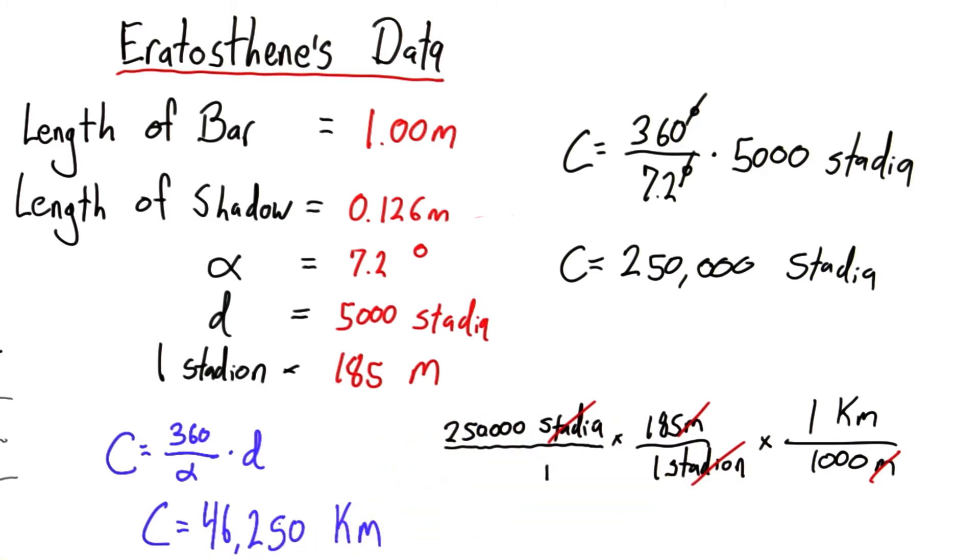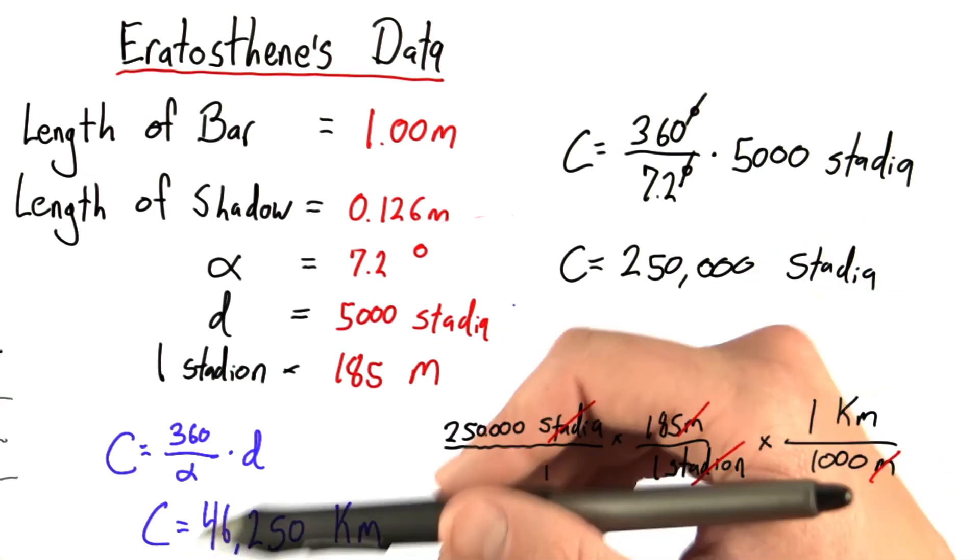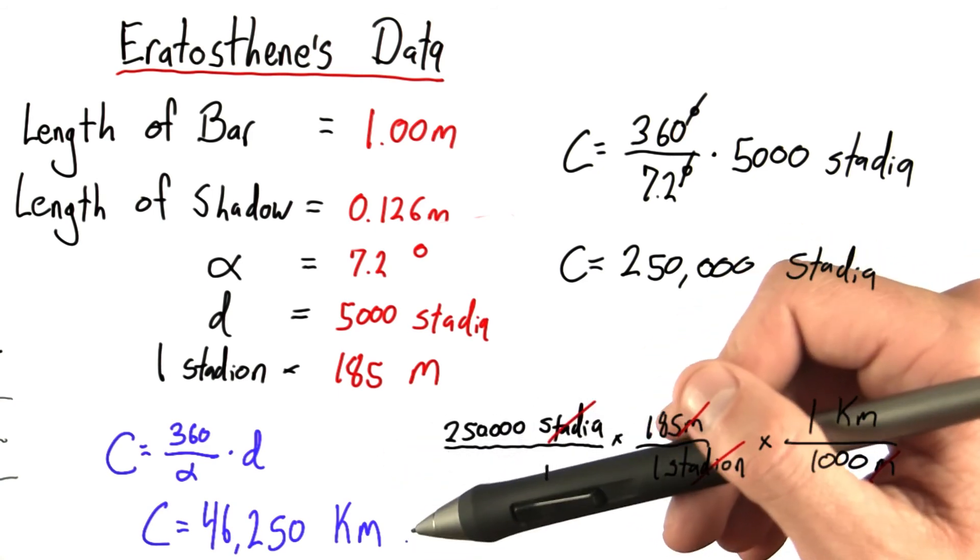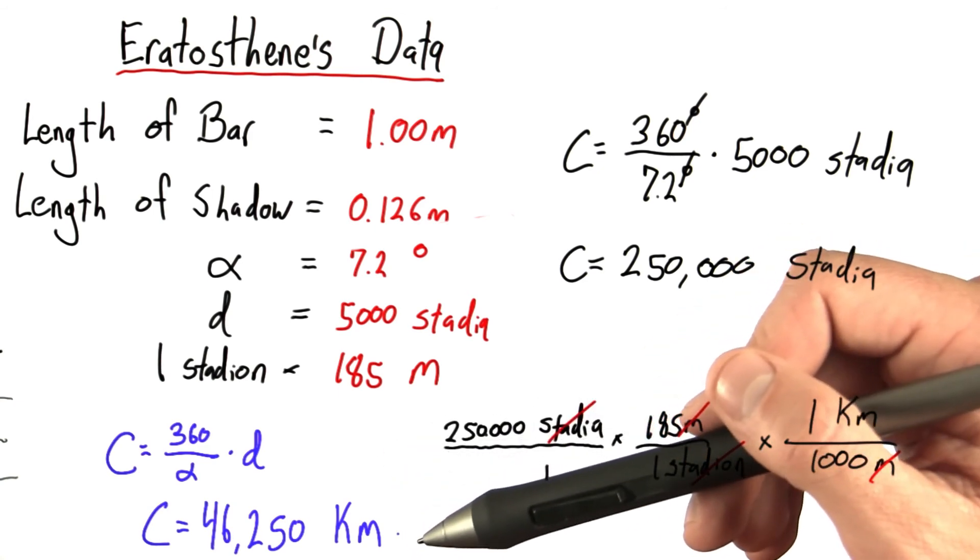Amazing. We did this all just with some shadows, some basic knowledge of geometry, and a little bit of trigonometry that we had to learn as well. Not only is it amazing that we could calculate the circumference using such basic knowledge, but the skills that we gain in doing so are skills we'll use throughout this course.